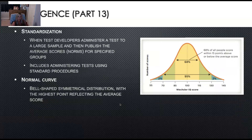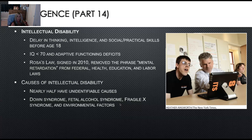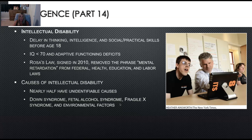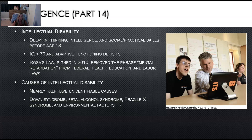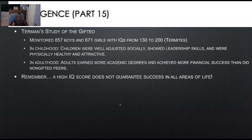Looking at intellectual disability — that's a delay in thinking, intelligence, and social-practical skills before age 18, with an IQ less than 70. You would learn in this class what is considered low-level intelligence and the causes of intellectual disabilities — because it has to do with chromosomes and different things you're born with, like Down syndrome, fetal alcohol syndrome (if the mother was drinking during pregnancy), fragile X syndrome, and also other various environmental factors.